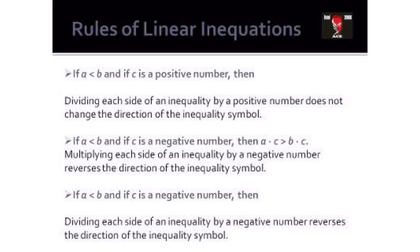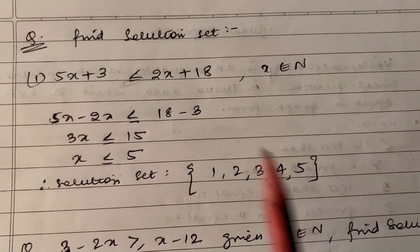If you divide both sides of a linear inequation by the same positive number, the direction of the inequality sign will not change. However, if you multiply both sides by a negative number — say minus 1 or minus 2 — then the sign of inequality reverses. For example, 3 is less than 5; multiplying both by minus 1 gives minus 3 and minus 5, and minus 3 is greater than minus 5. Similarly, dividing both sides by a negative number also reverses the inequality sign.